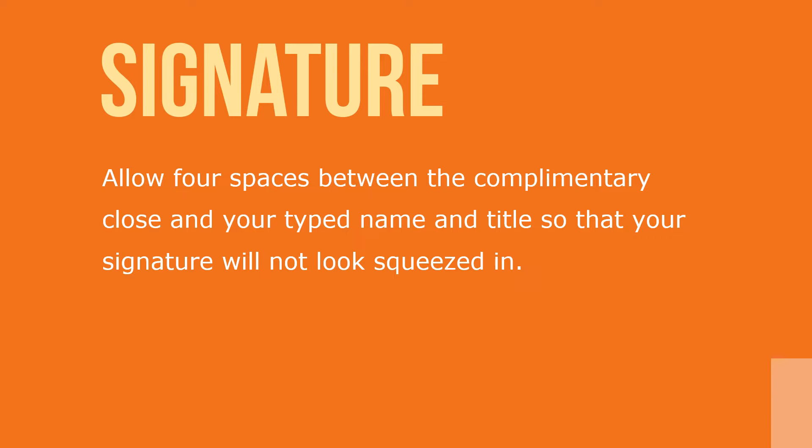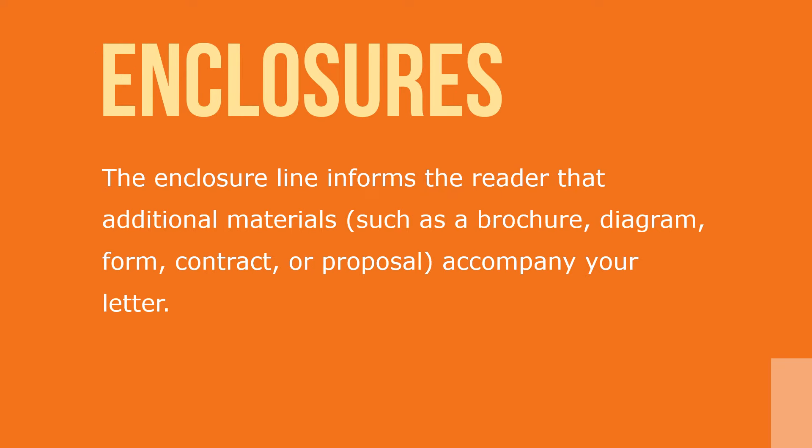A stamped signature tells readers that you could not give them personal attention. Some organizations prefer using the company name along with the employee's name in the signature section. If so, type the company name in capital letters, two line spaces below the complimentary close, and then sign your name. The enclosure line informs the reader that additional materials, like a brochure, diagram, form, contract, or proposal, accompany your letter. Enclose only the items necessary and indicate enclosures with the number of enclosures on the line.